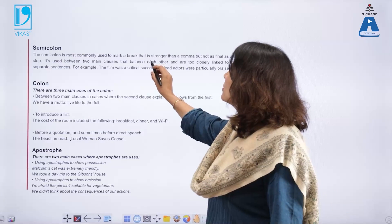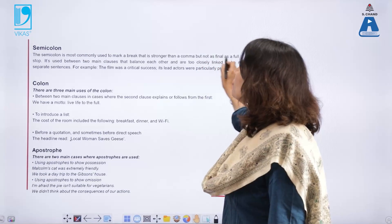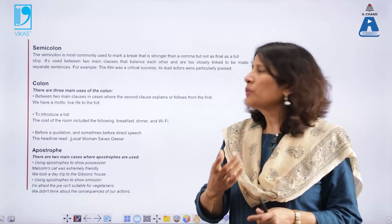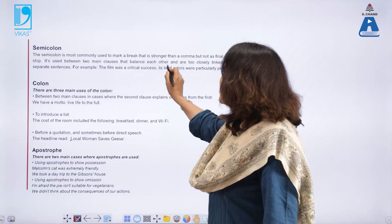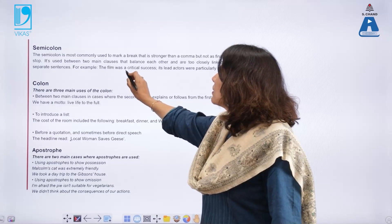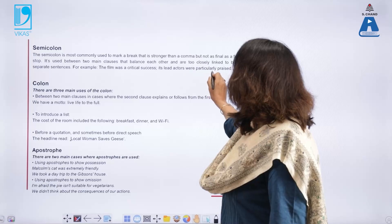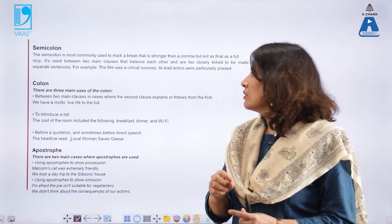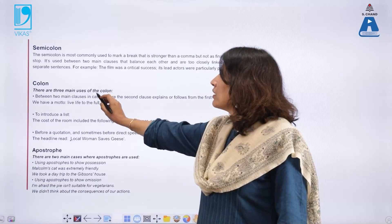The semicolon is the most commonly used mark to indicate a break that is stronger than a comma but not as final as a full stop. It is used between two main clauses that balance each other and are too closely linked to be made into separate sentences. For example: 'The film was a critical success; its lead actors were particularly praised.' It is a slightly bigger, longer break than a comma.